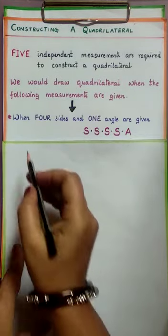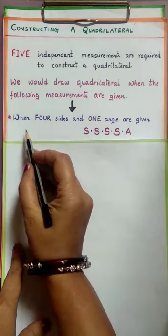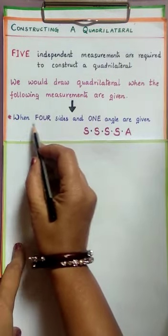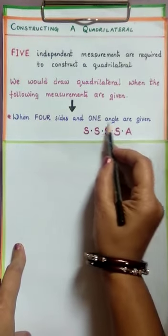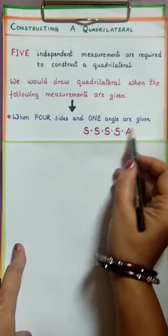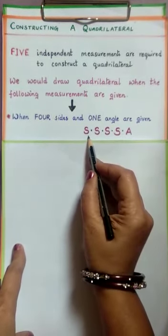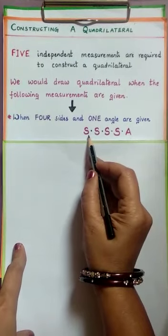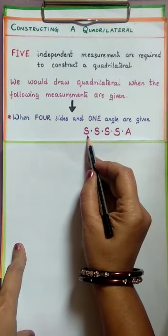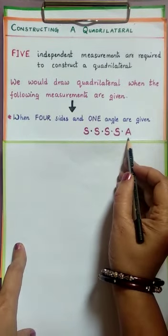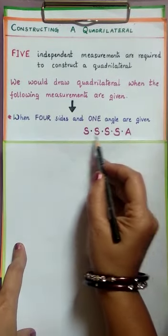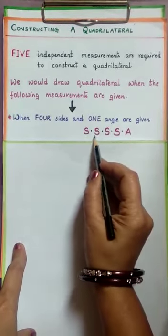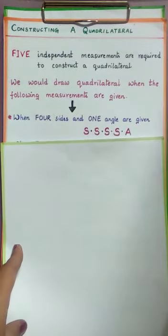See the first one: when 4 sides and 1 angle are given. I've written this in short form — S for side, A for angle — so this case is S, S, S, S, A.